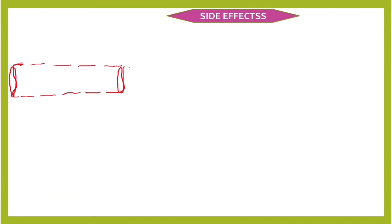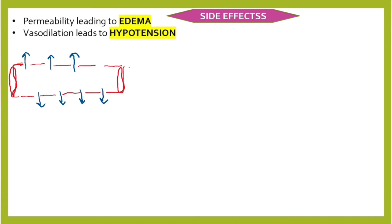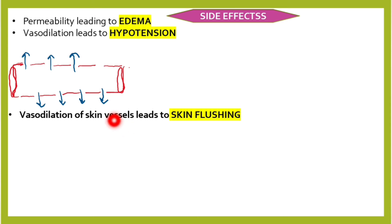Now let's look at the side effects of alpha blockers. For blood vessels: first, there will be vasodilation; second, there will be increased permeability. Increased permeability causes edema. Vasodilation can cause hypotension, and if vasodilation occurs in skin vessels it can cause skin flushing.